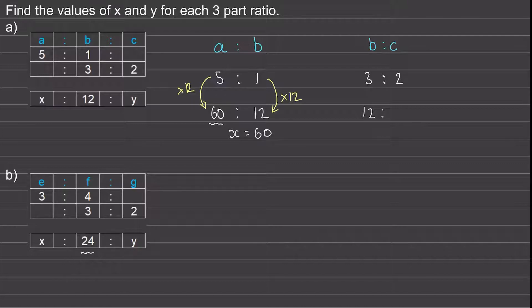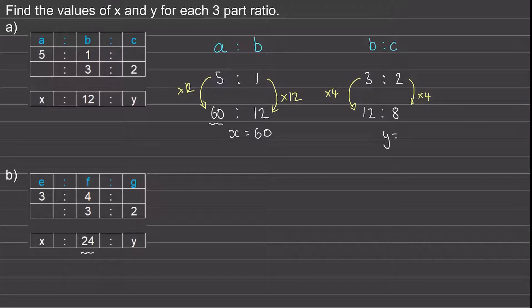For the second ratio we need to multiply the three by four to make 12, and two times four gives us a value of c equal to eight.